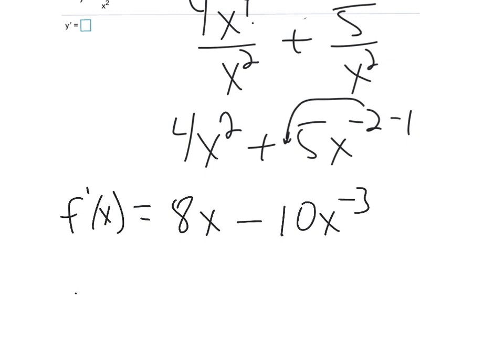While we're on a roll, let's just find the second derivative. The derivative of 8x is 8, and this one will become +30x^-4. There we go, that was very easy if you broke it up.